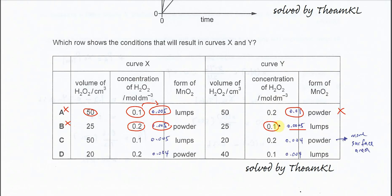Now let's compare option C. For curve X, after we use this volume and concentration we get the mole of 0.005. For curve Y, it's 20 times 0.2 over 1000, giving 0.004. So the mole of X is larger than Y, which is okay. How about the concentration?